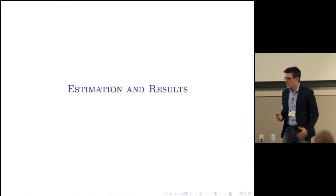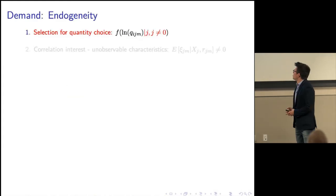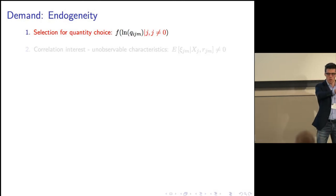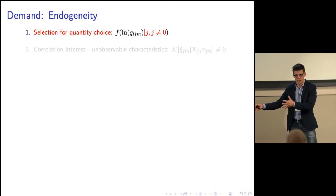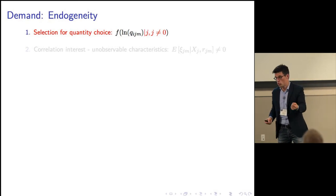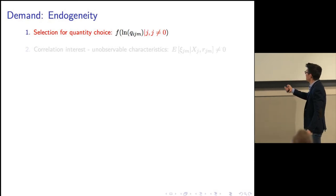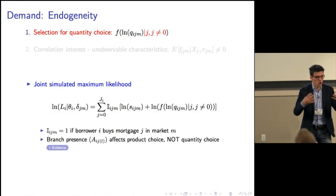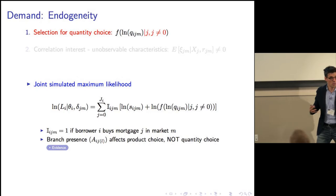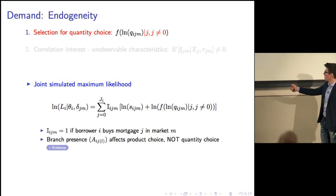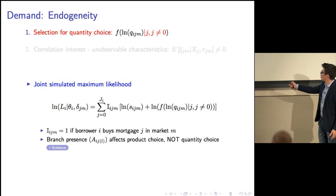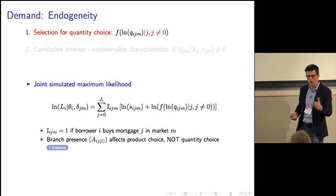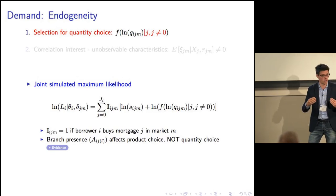Taking the model to the data, I face identification concerns. The first is that the product a borrower chooses — the bank and product they go to — is an endogenous choice, so a regression of quantity on interest rate would have a selection problem. To account for this, I estimate the model with joint maximum likelihood, simultaneously modeling the product choice S_ijm and the conditional quantity choice given the chosen product. The branch network provides separate identification of the two components.